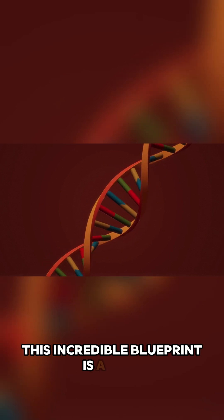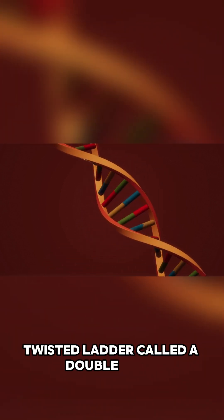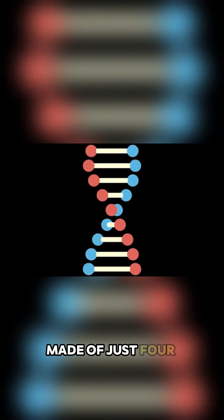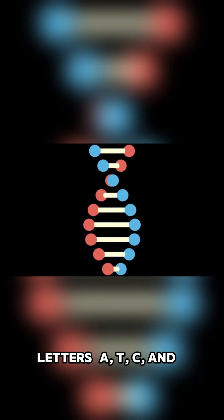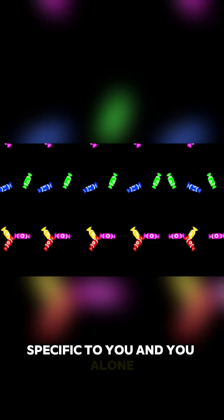This incredible blueprint is a long, twisted ladder called a double helix. The rungs of the ladder are made of just four chemical letters: A, T, C, and G. The way these letters are arranged creates a unique code that is specific to you and you alone.